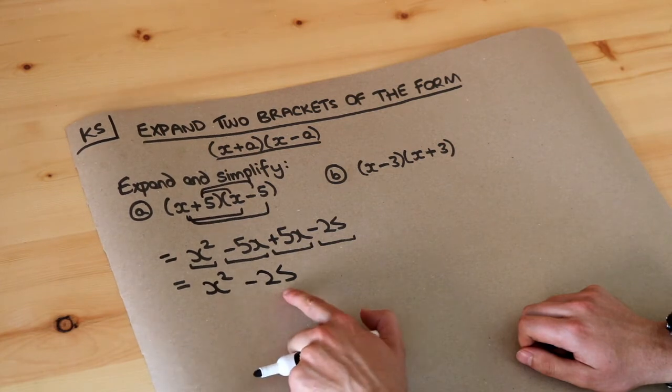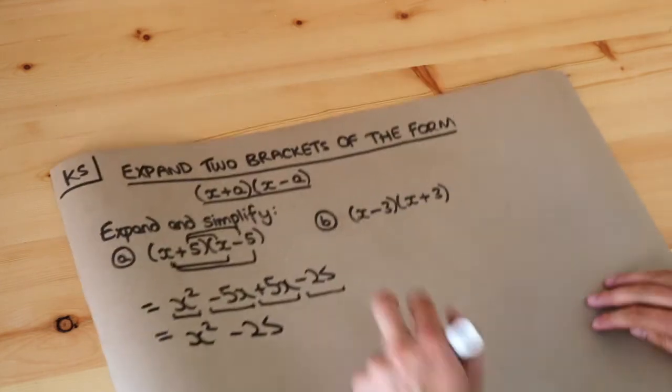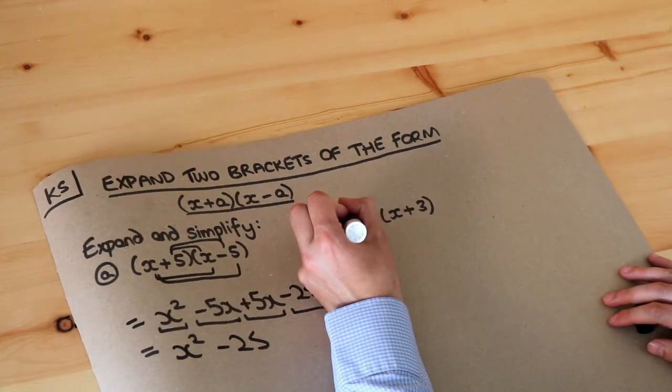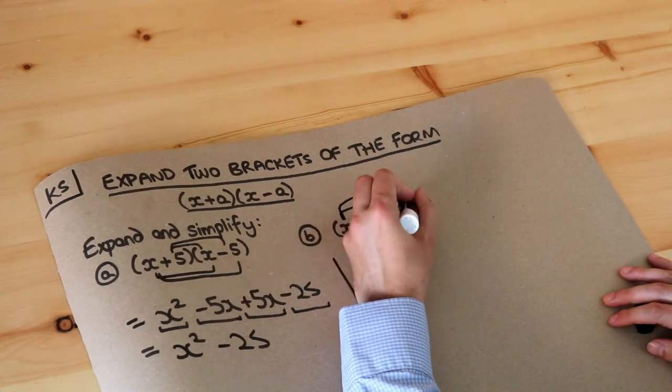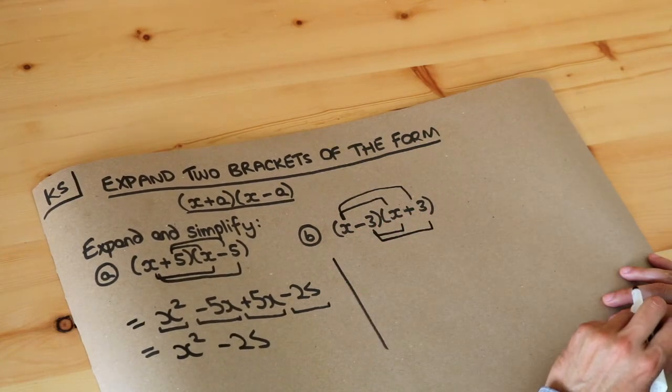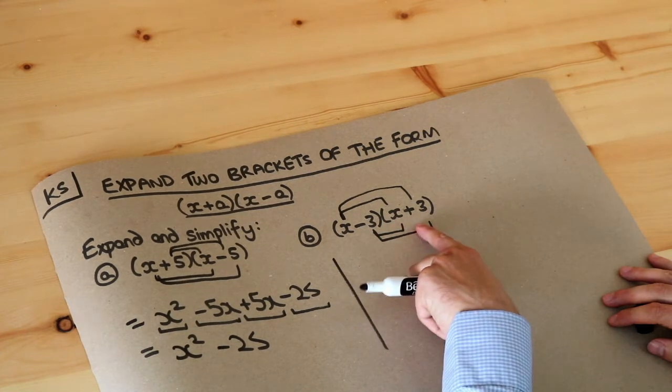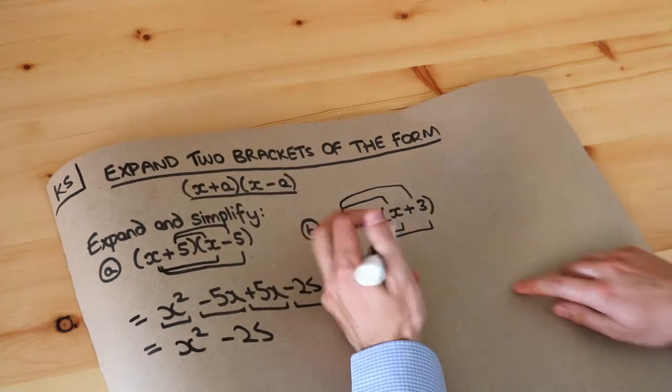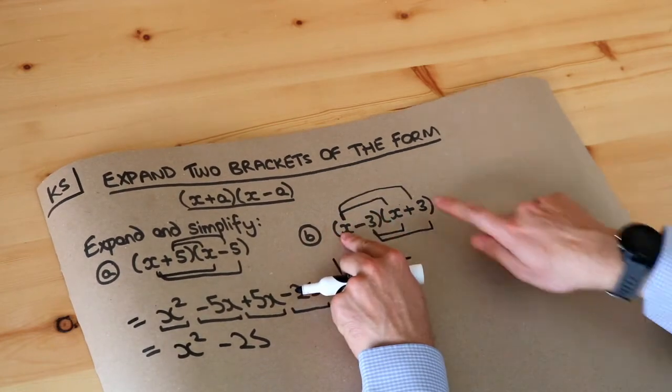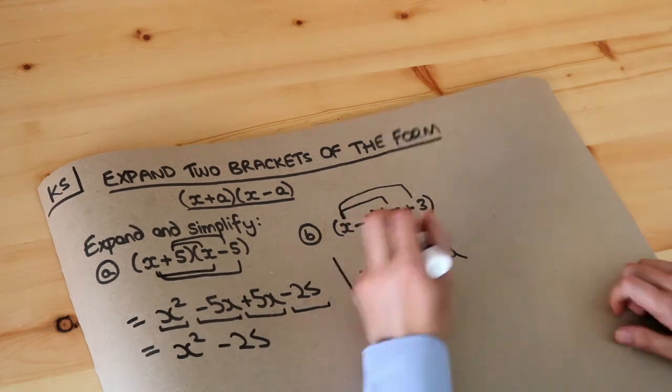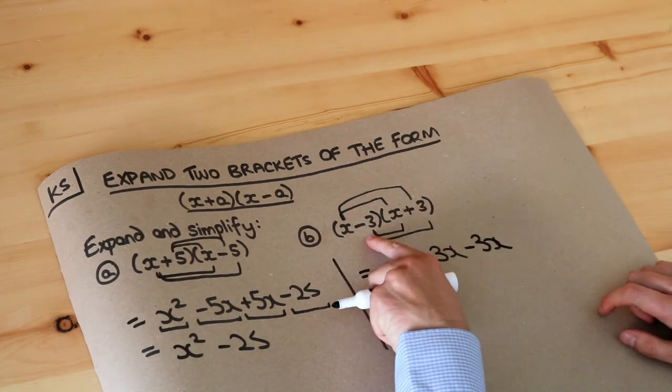Let's do the same here and we'll hopefully see the same pattern. We do the x times each thing in the second bracket, and then the -3 times each of the things in the second bracket. So remember, each thing in the first bracket times each thing in the second. So the x gets times by the x, x². x gets times by the 3, +3x. And the -3 gets times by the x, -3x. And the -3 gets times by the 3, -9.